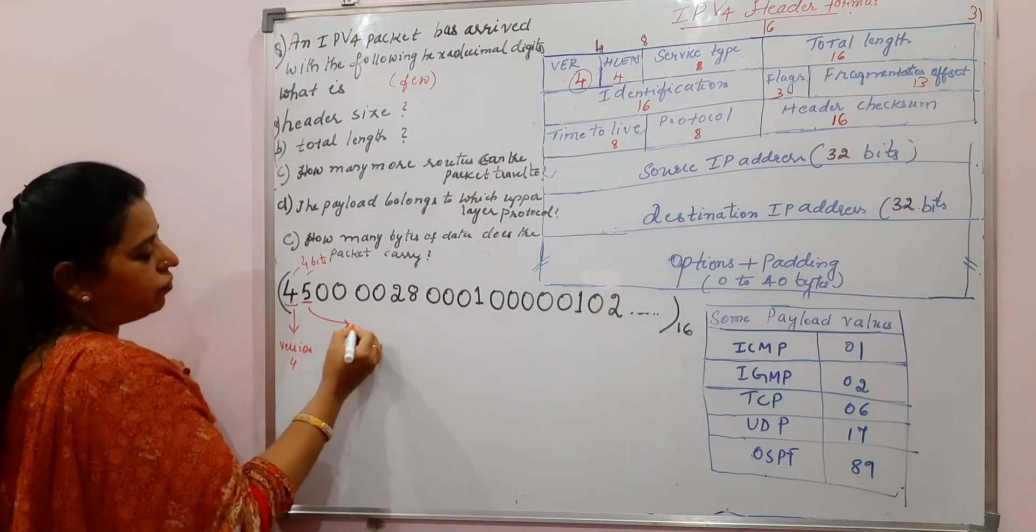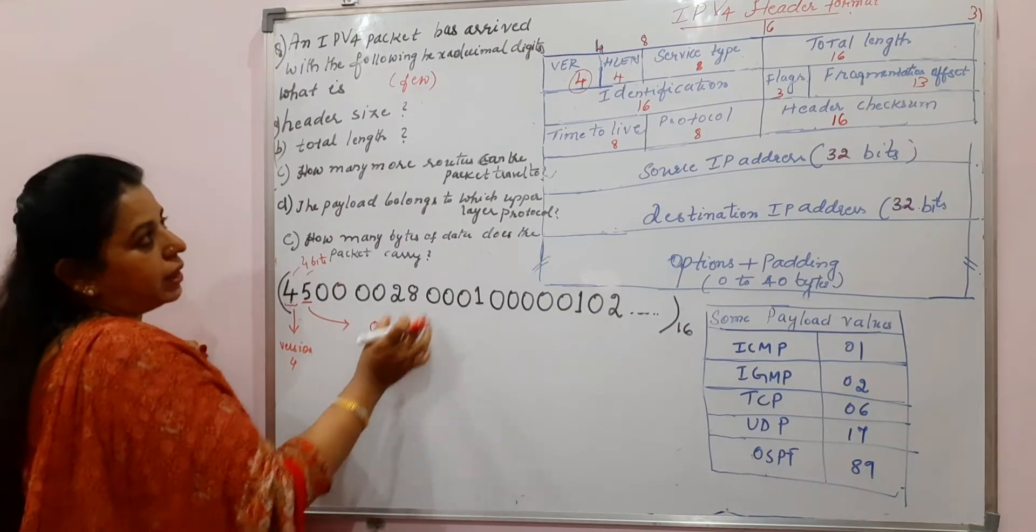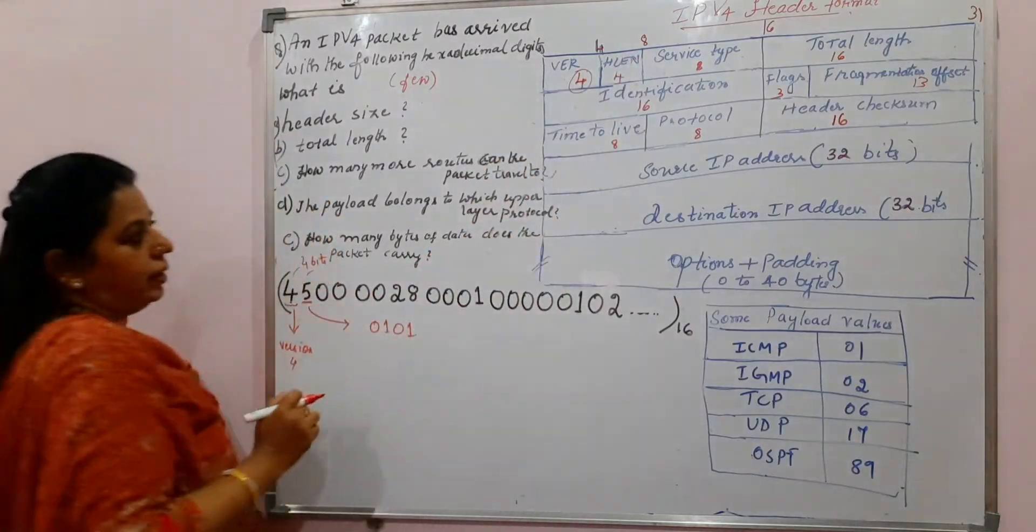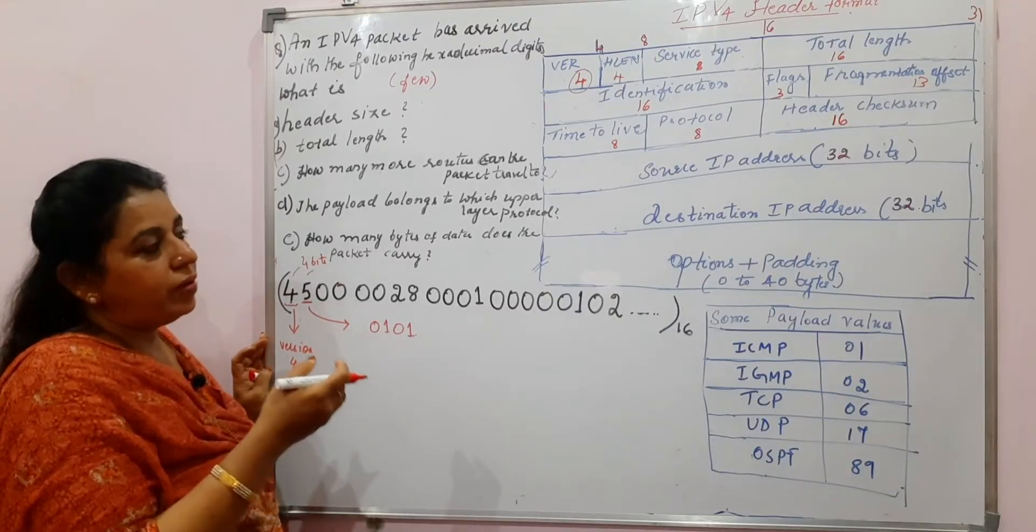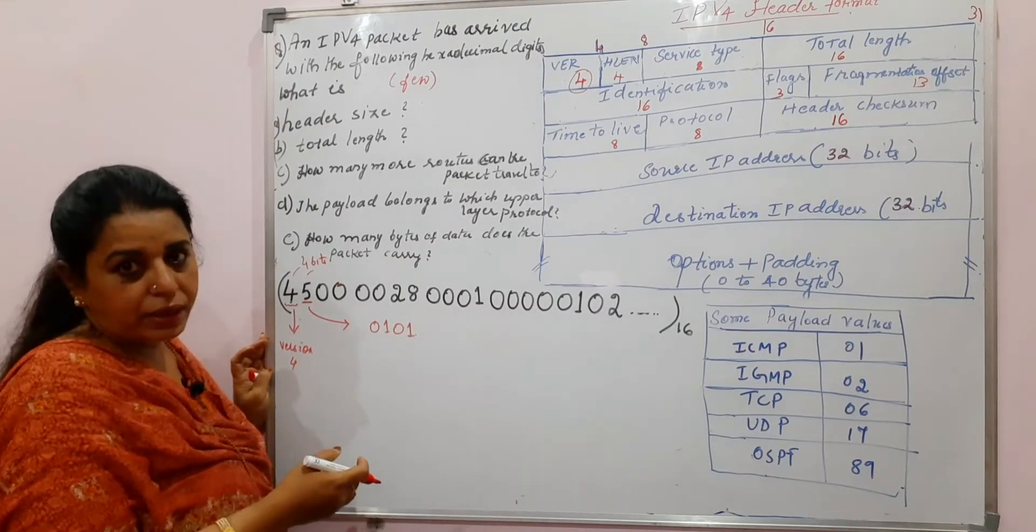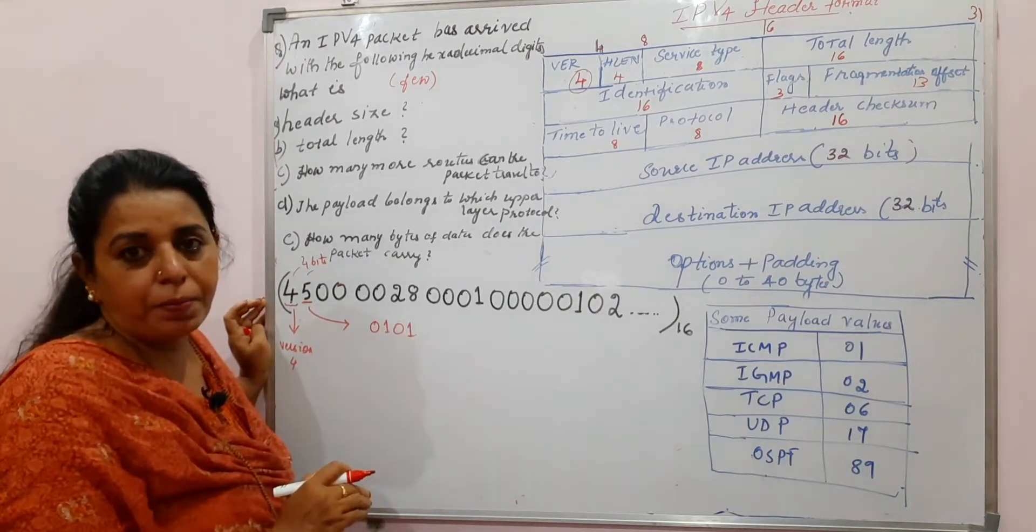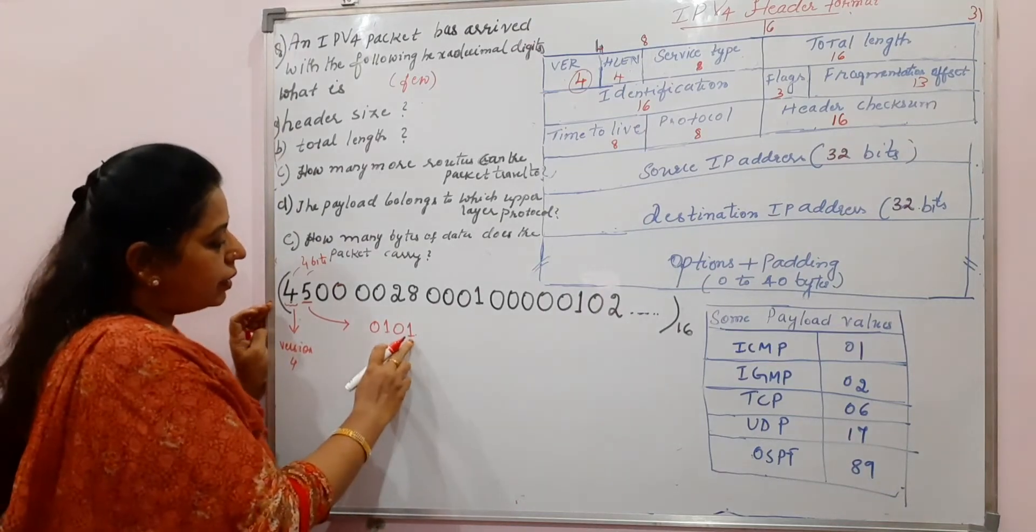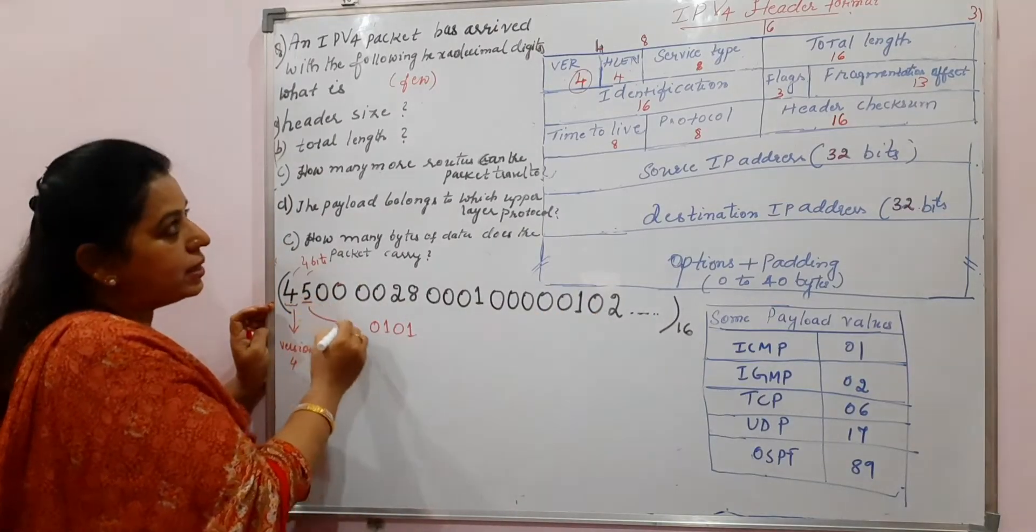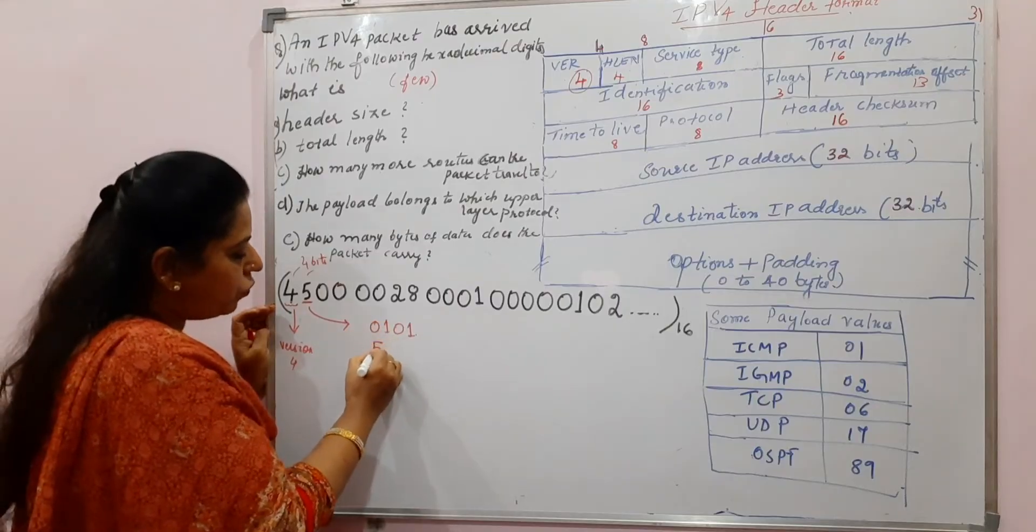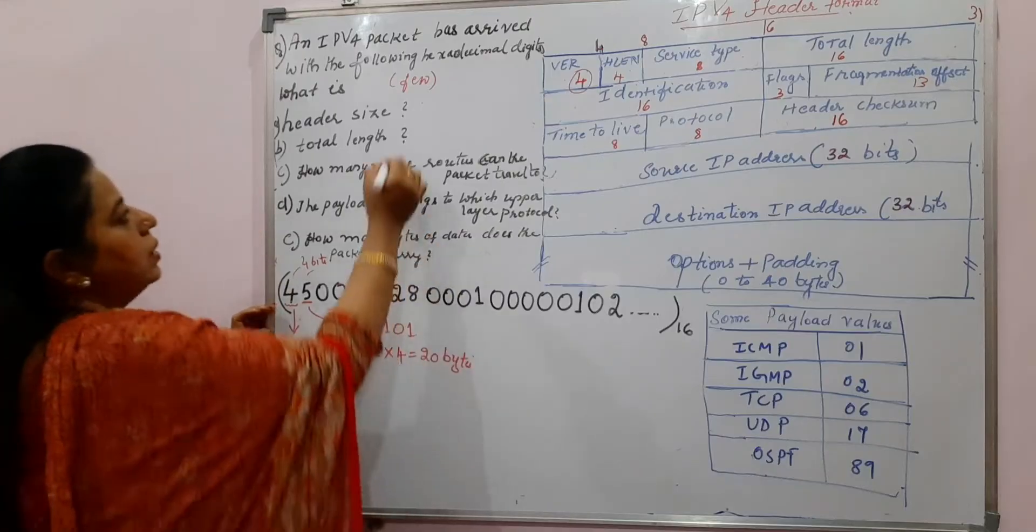5 in binary is 0101. These 4 bits are meant here to represent the header length. But in the previous session, I have explained you that the header length is always represented in 4 byte words. That is, the sender and the receiver makes use of the divide by 4 and multiply by 4 method. Here, the receiver has to multiply. This information is received at the receiver side. It carries the header length value as 5. So 5 into 4 is 20. The size of the header length is 20 bytes.